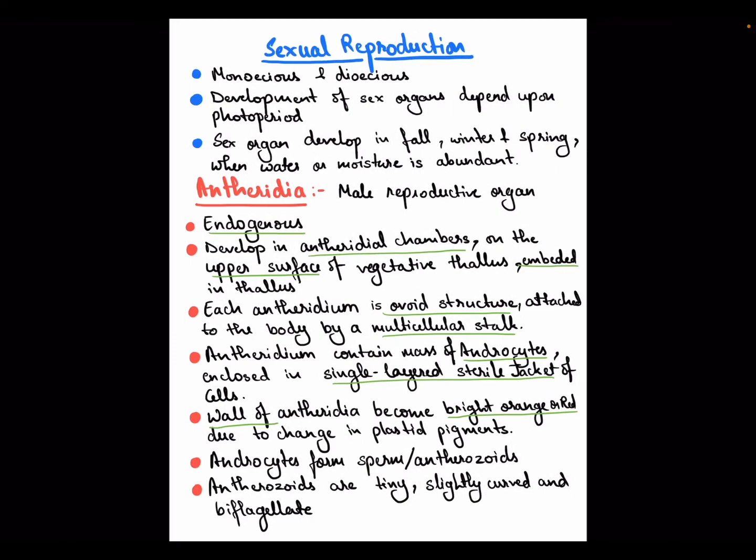Now let's talk about sexual reproduction in Anthoceros. Some species are monoecious and some species are dioecious. Sex organs are developed according to photoperiod — their development depends on photoperiod. Short day conditions are important for sex organ development. Sex organs develop in fall, winter, and spring, when water and moisture content in the atmosphere are also abundant. Short day photoperiod conditions trigger sex organ development in Anthoceros.